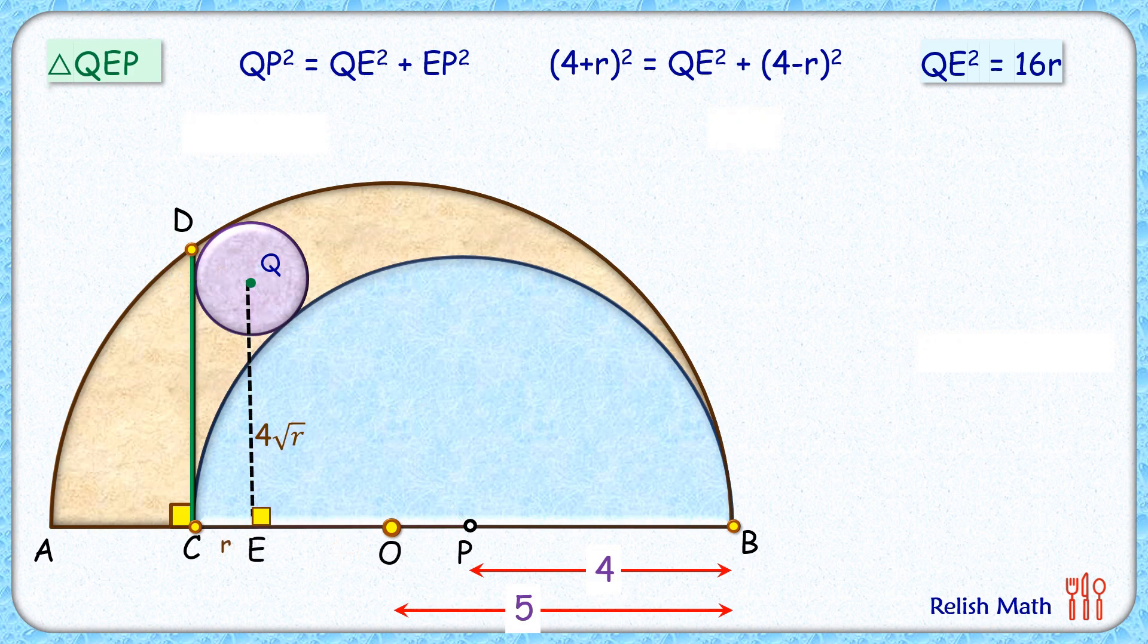Now here two more circles are touching each other—that's this purple and the brown circle—and thus their point of contact and the centers lie in a straight line. QO length will be the radius of brown circle minus radius of purple circle, so QO length will be 5 minus r.